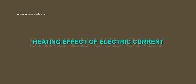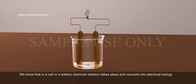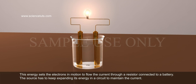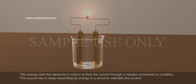Heating effect of electric current. We know that in a cell or a battery, a chemical reaction takes place and converts into electrical energy. This energy sets the electrons in motion to flow the current through a resistor connected to a battery. The source has to keep expending its energy in a circuit to maintain the current. Where does this energy go?